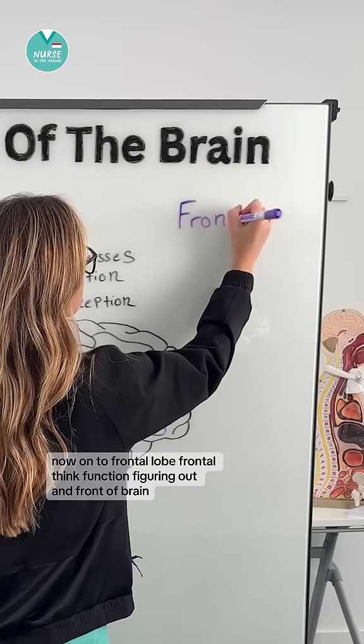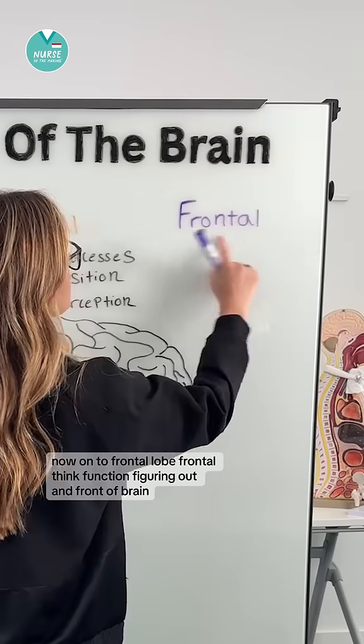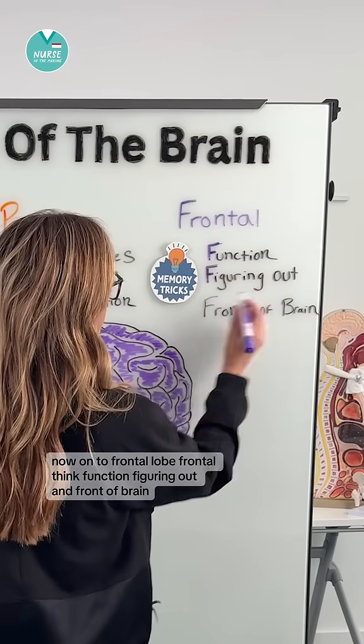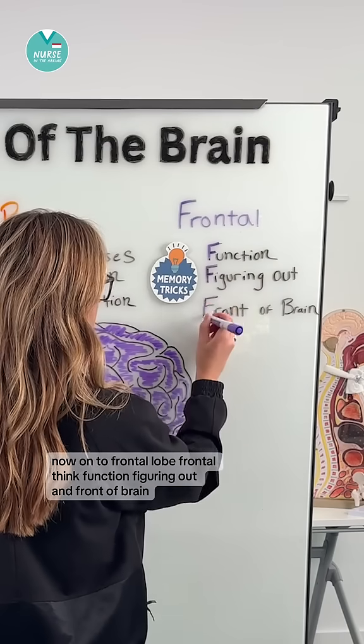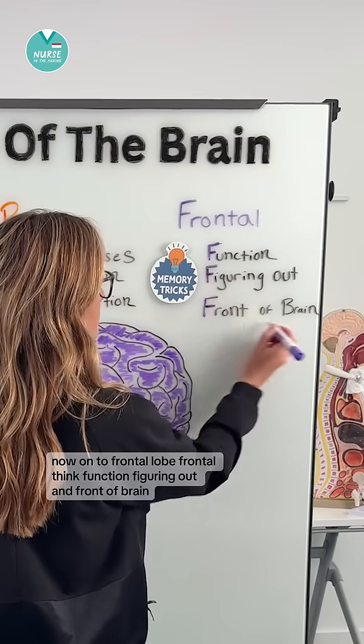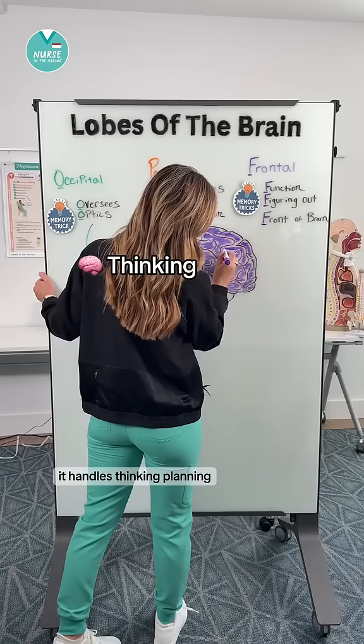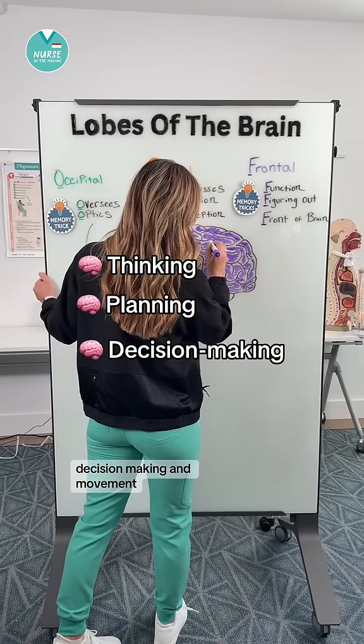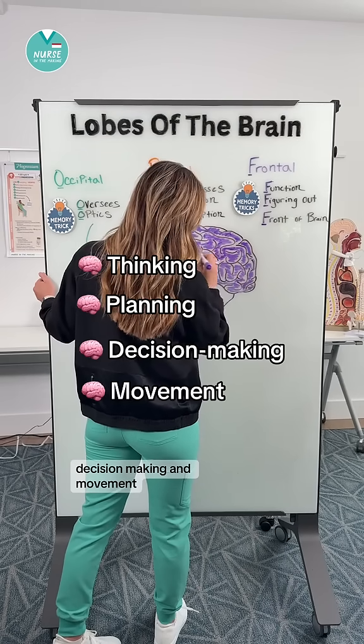Now, on to the frontal lobe. Frontal — think 'function, figuring out, and front of brain.' It handles thinking, planning, decision making, and movement.